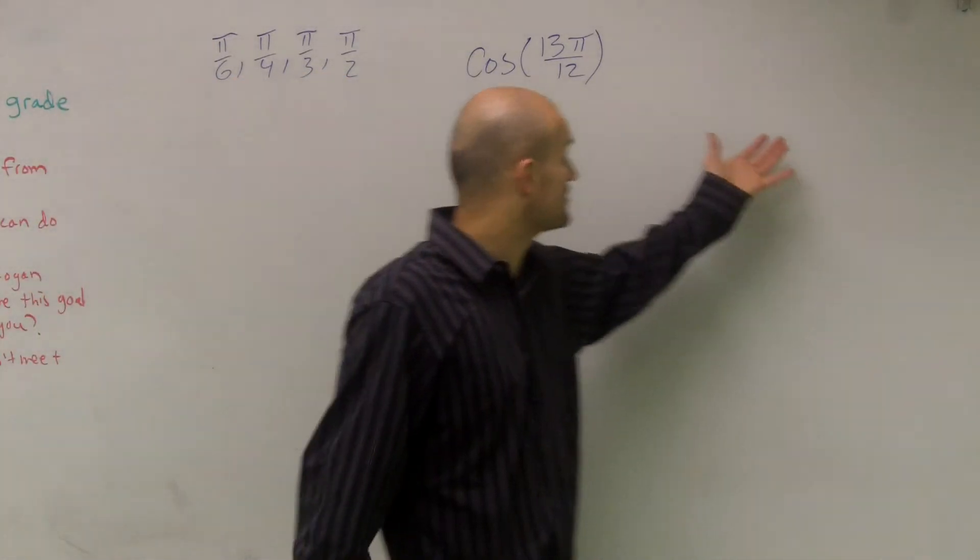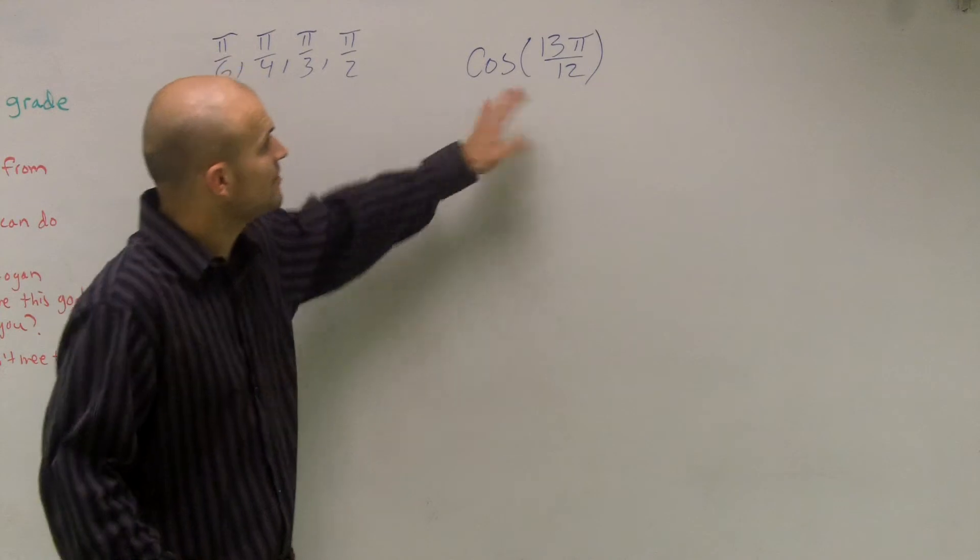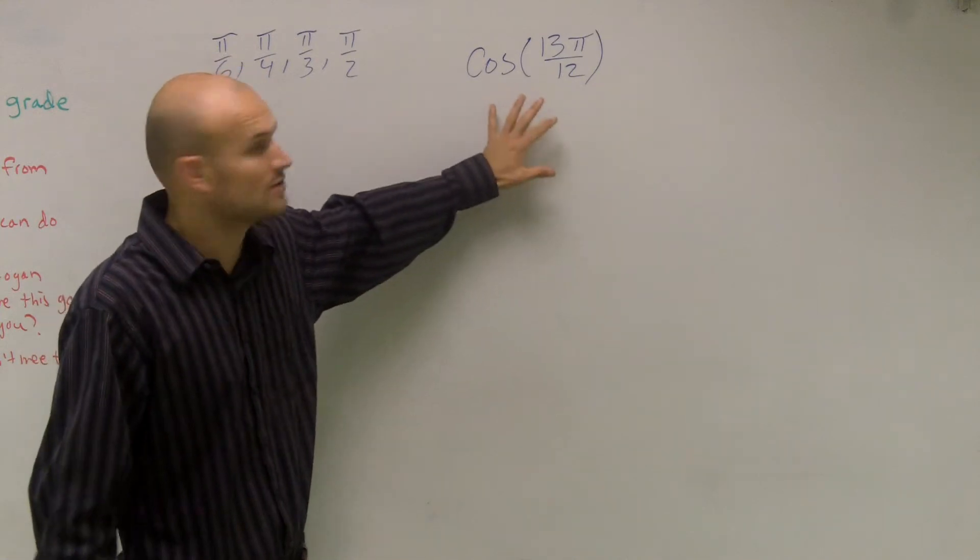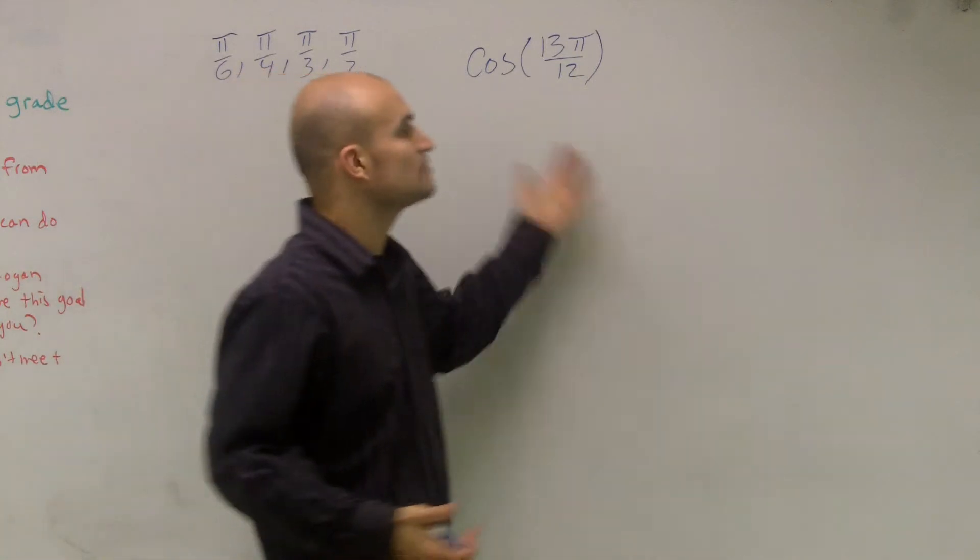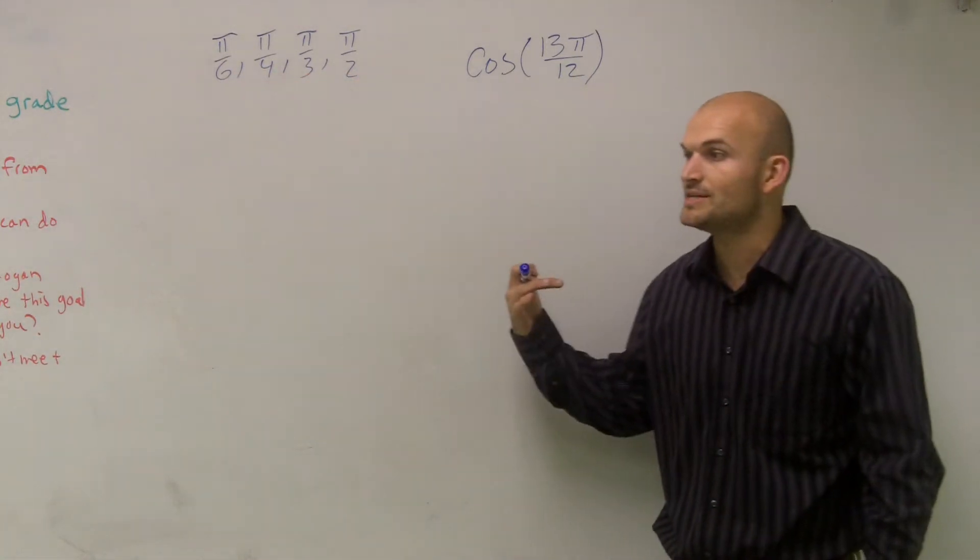OK. So what I want to do now is find the cosine. And if you remember, we can't figure out the values for cosine of 13π over 12, at least not an exact value. We can figure out the approximations by just plugging it into our calculator, right? And that'll give us our approximations.